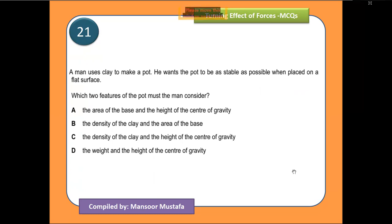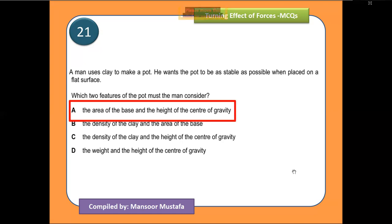The next question: a man uses clay to make a pot as stable as possible. Stability depends on only two things: the area of the base and the height of the center of gravity. Density or weight do not directly determine stability. On that basis, the correct option relates to base area and center of gravity height.